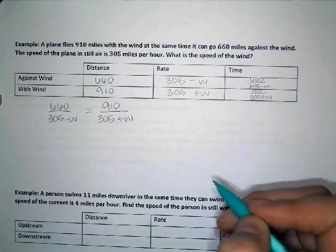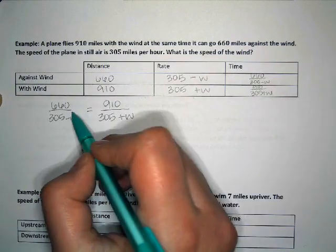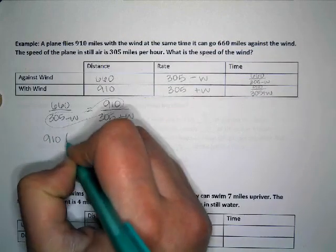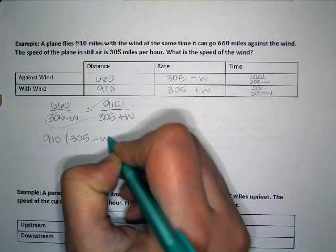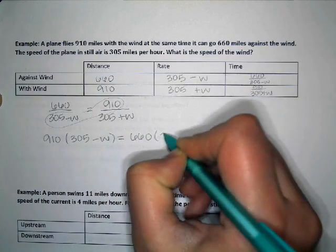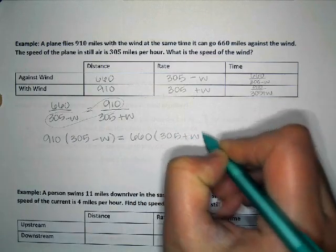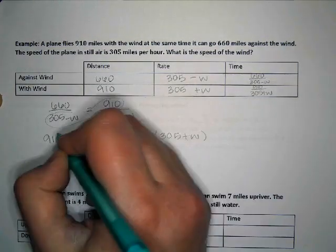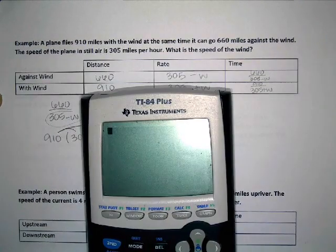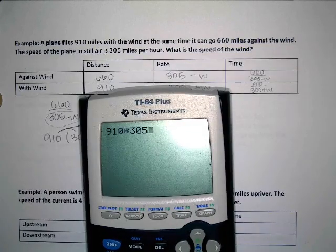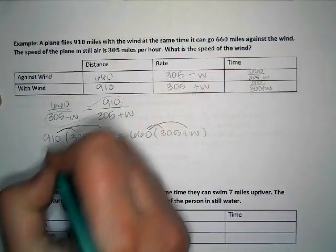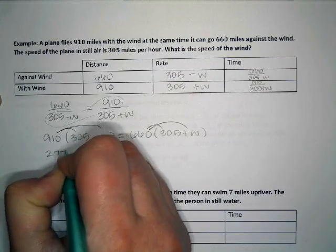So we're going to say 660 over 305 minus W is the same as 910 over 305 plus W. And then whenever you have two fractions that equal each other, you can go ahead and cross multiply. So we're going to have 910 times 305 minus W equals 660 times 305 plus W.